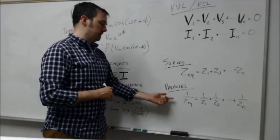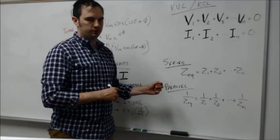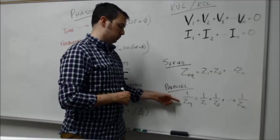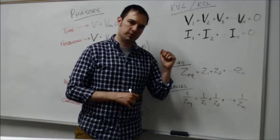If you have impedances in parallel, it follows the similar relationship as we solved for resistors in parallel, where it's one over the equivalent impedance is equal to the sum of one over each of the individual impedances that are in parallel.